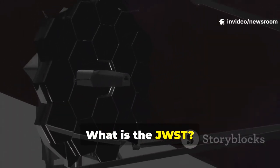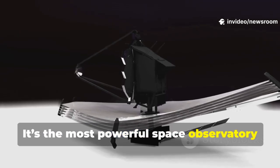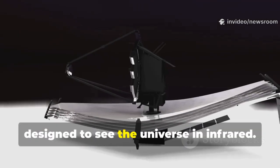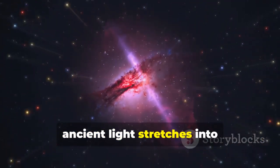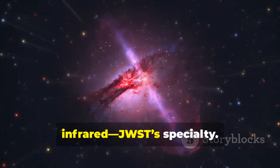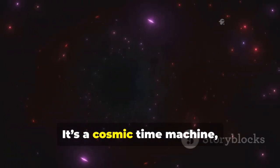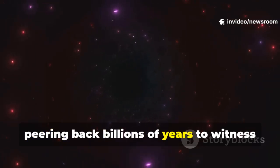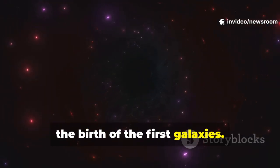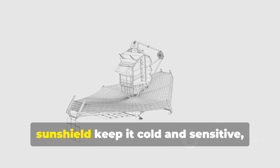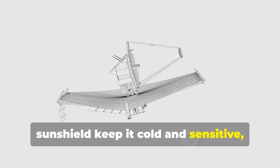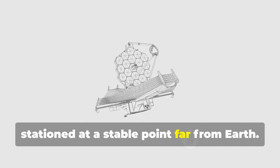What is the JWST? It's the most powerful space observatory ever built, designed to see the universe in infrared. As the universe expands, ancient light stretches into infrared—JWST's specialty. It's a cosmic time machine peering back billions of years to witness the birth of the first galaxies. Its massive, gold-coated mirror and tennis court-sized sunshield keep it cold and sensitive, stationed at a stable point far from Earth.